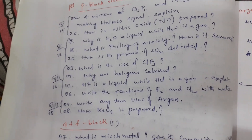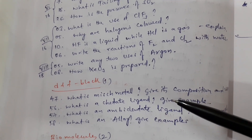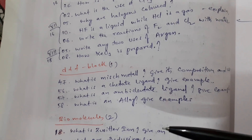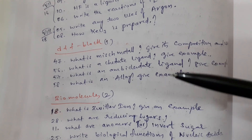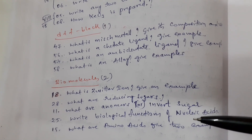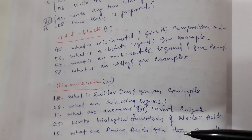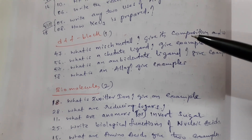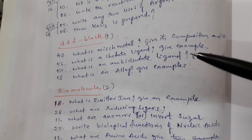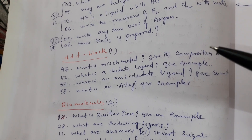D and F block — one will be coming from this chapter. Biomolecules — two will be coming from this chapter. These are the questions; please make a note. Five questions are given from the Biomolecules chapter, and four questions from D and F block. These are the VSAQs — the last section. Second year chemistry paper, we have been discussing.